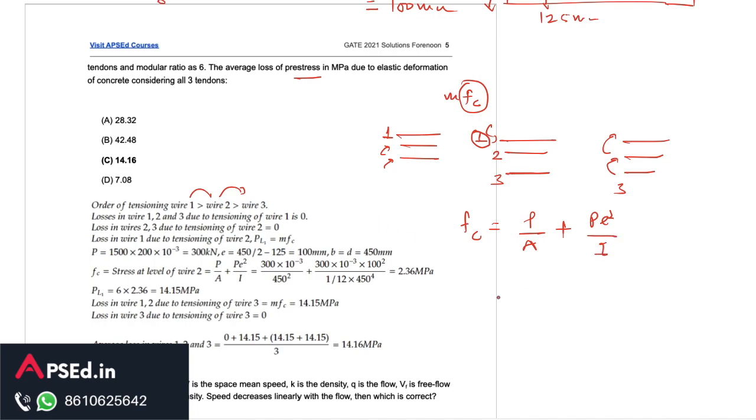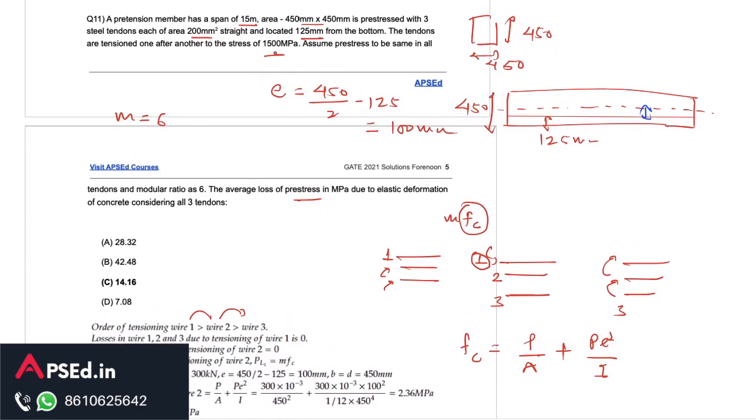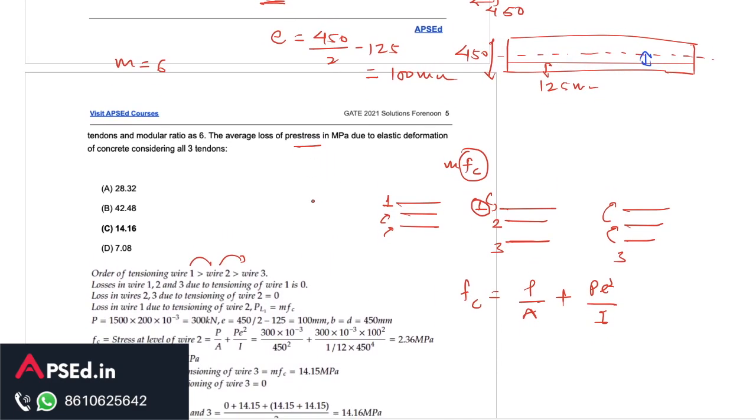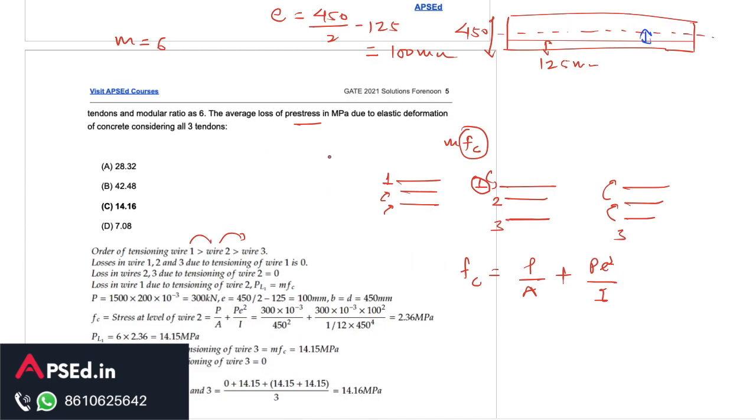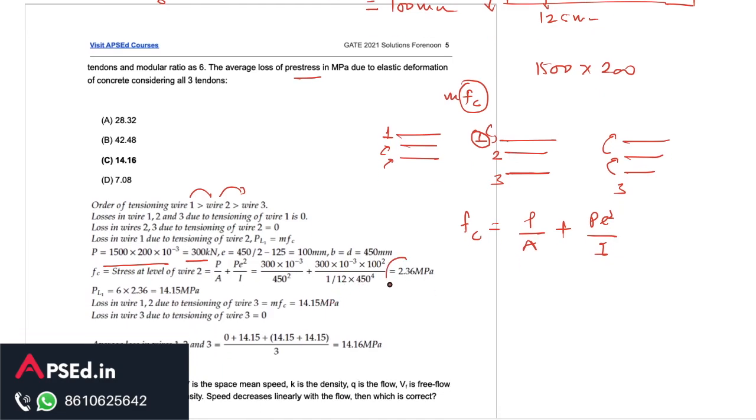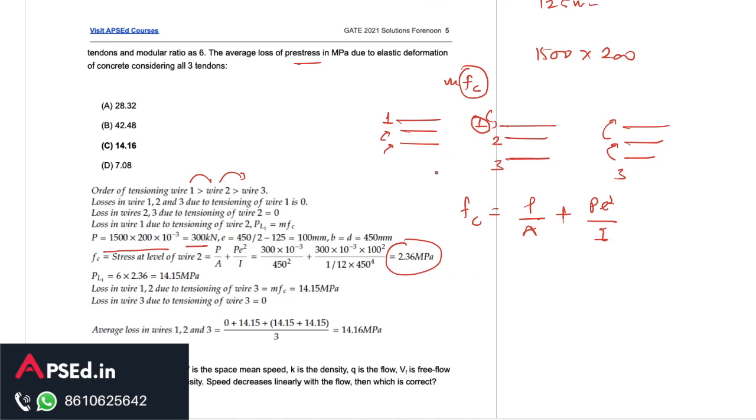That is given as p by a plus p e square by i. All this data is given, p if we calculate can be calculated with the help of this given stress in the tendons and the area, 1500 times 200. This is the basic idea here. We can find out the force and eccentricity we calculated, so using these formula we find this fc as 2.36 MPa.